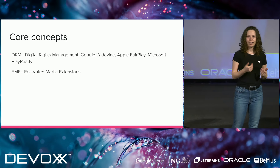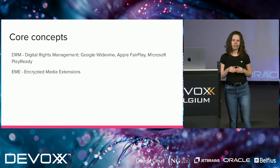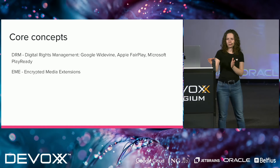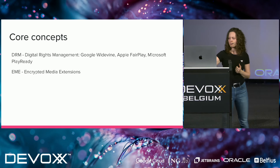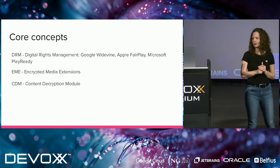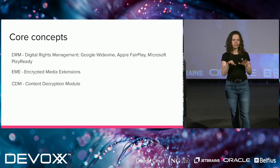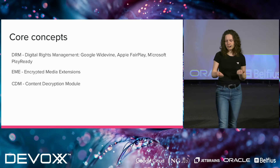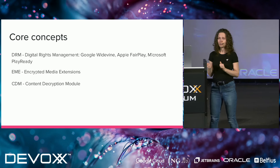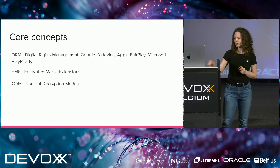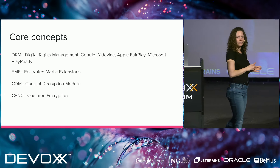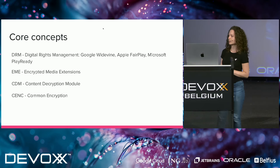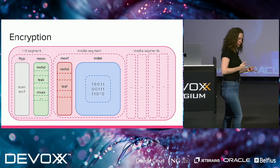Then we have EME — Encrypted Media Extensions — the API used between the player (your web application) and the CDM module that actually decrypts the content, allowing you to decrypt the content. CDM — Content Decryption Module — is the heart where content is decrypted. It's not open source; it's a binary that comes with the browser installation. Last but not least, CENC — Common Encryption — is the standard encryption scheme supported by all the DRMs I just mentioned.